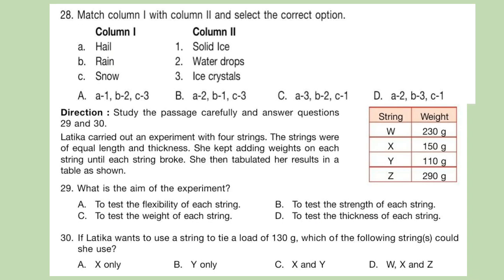Question 28: Match column 1 with column 2 and select the correct option. Column 1: Hail, rain and snow. Column 2: Solid ice, water drops, ice crystals. Select your answer carefully.